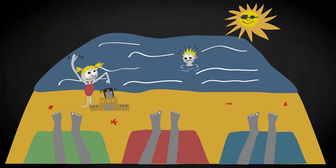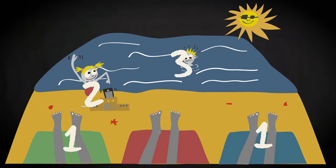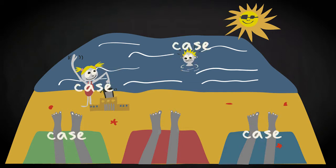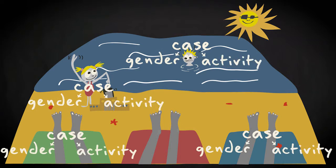You are at the beach and observe your fellow beach visitors. You notice three different activities among them, which are mutually exclusive: people resting — they are all sitting or laying on the beach; people playing — these are running around, building sand castles or standing in the water; and finally, people swimming. Furthermore, you distinguish by gender. So each person you observe is a case in your data set, while gender and activity are variables.